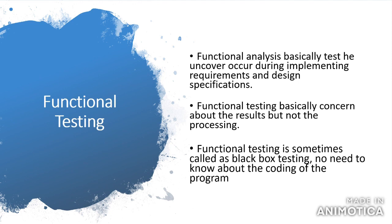In functional testing, we try to find which type of requirements are needed in the implementing stage or the design specification — it uncovers requirements and design specifications during implementation. It basically focuses on result rather than the processing. Because of its unique ability to uncover requirements and design specifications, it is sometimes called black box testing, as there is no need to know about the coding of the program — we only need to know about the function and its errors.